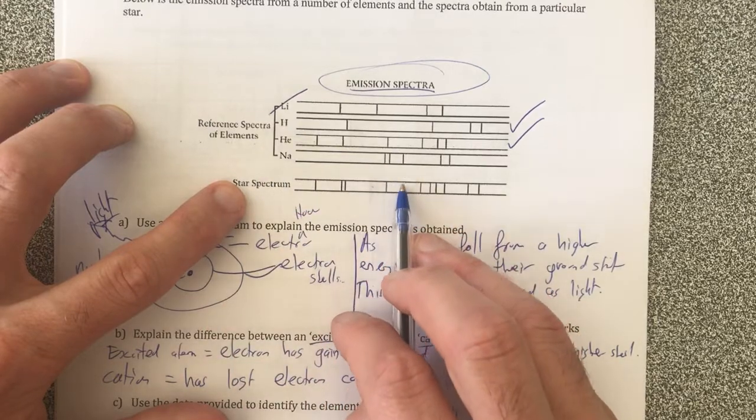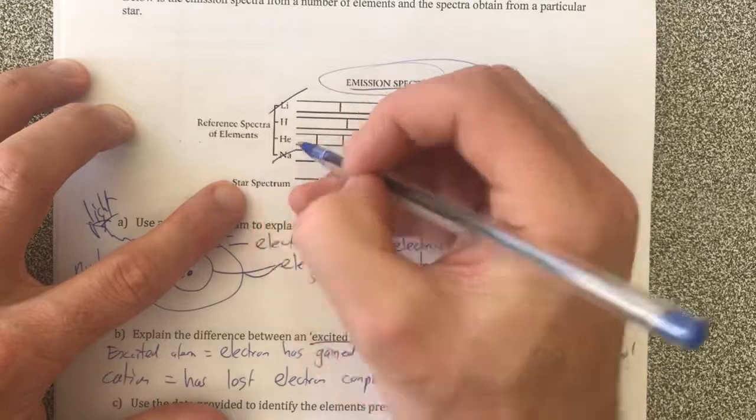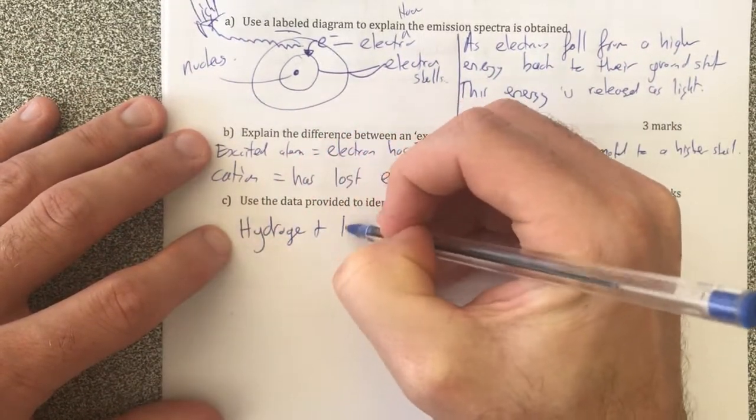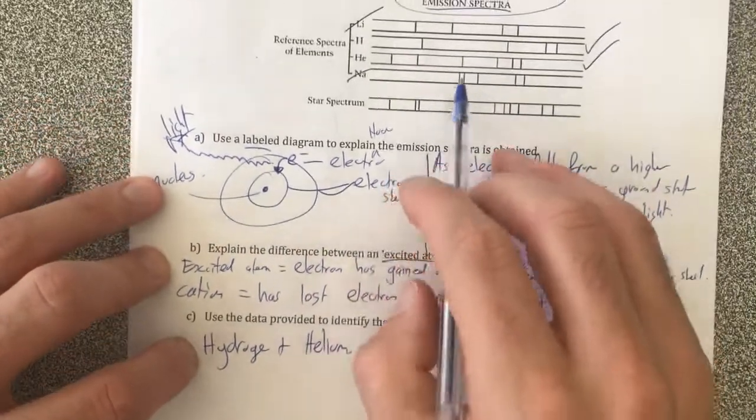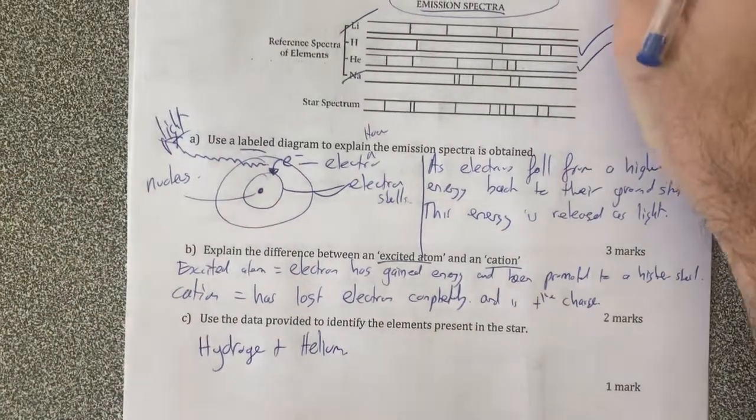Sodium does not have wavelengths that correspond to our star, so sodium's not good. So it must be just hydrogen and helium are present in our star that we're analyzing. And that's our answer to question three. Thank you.